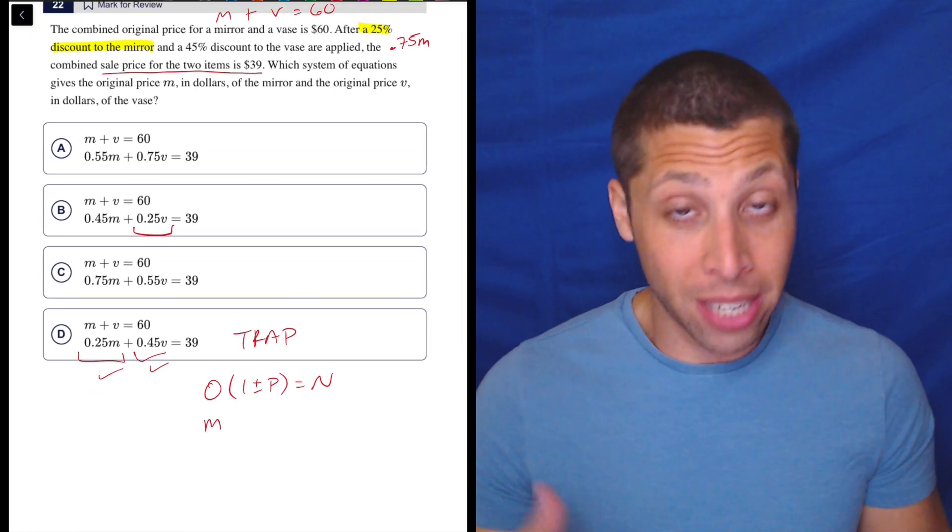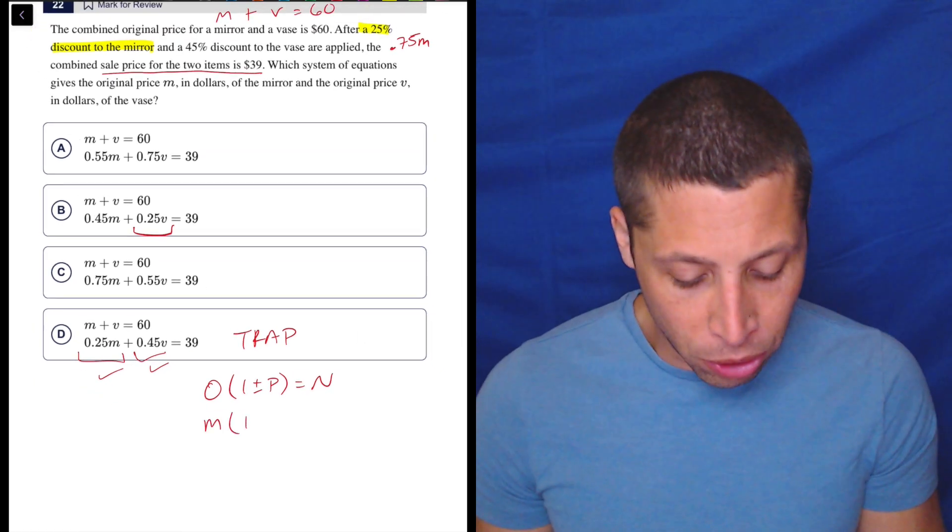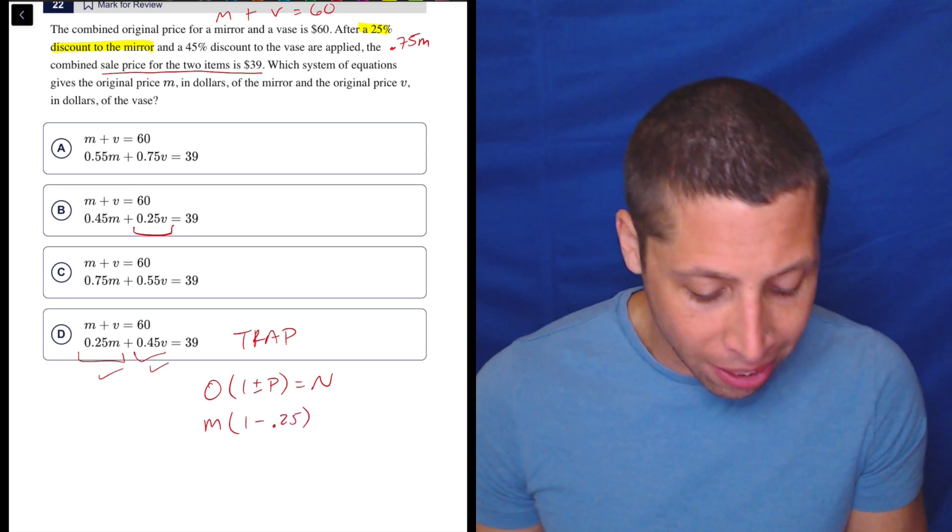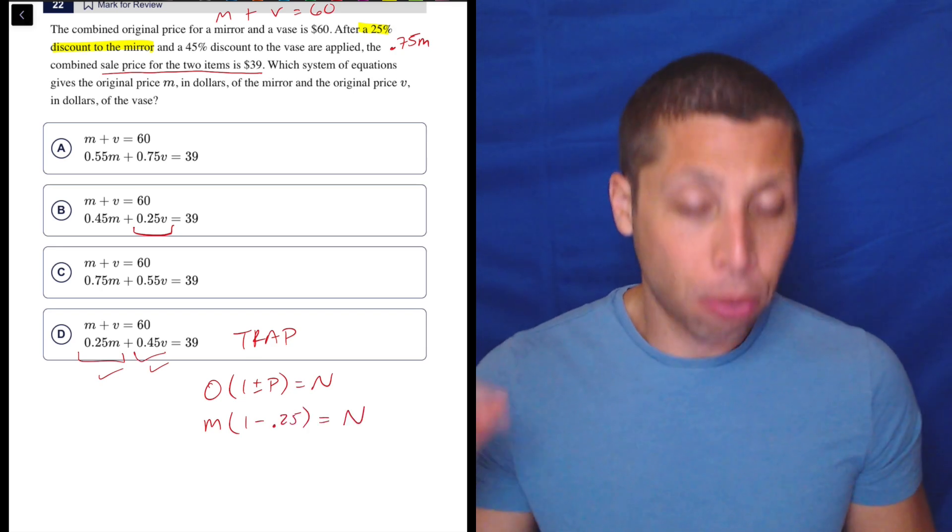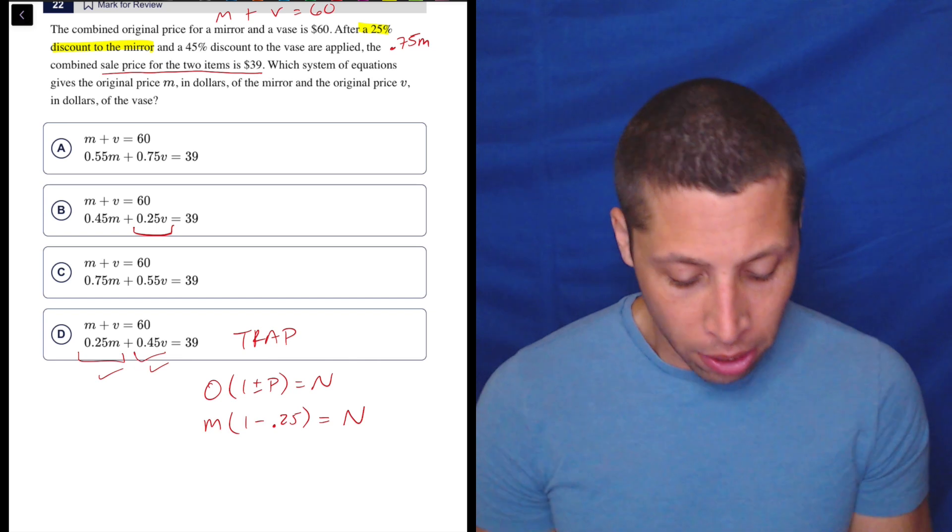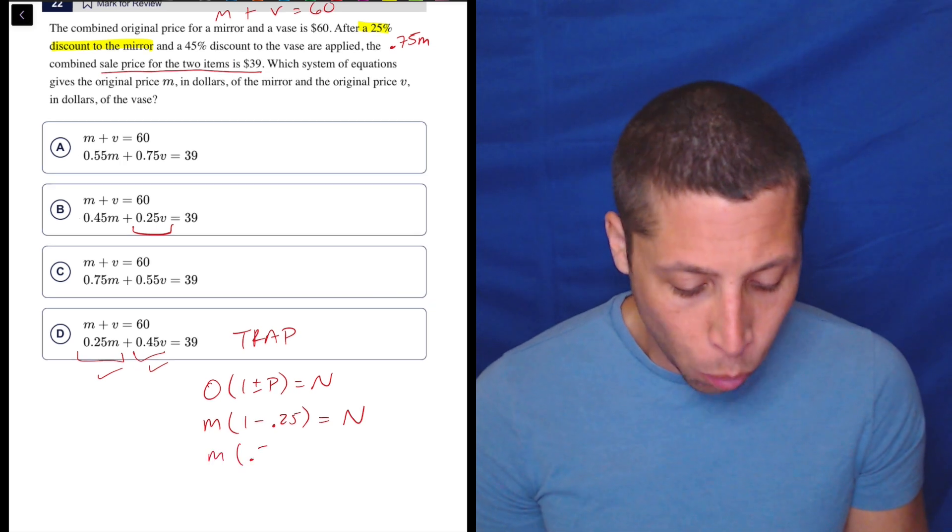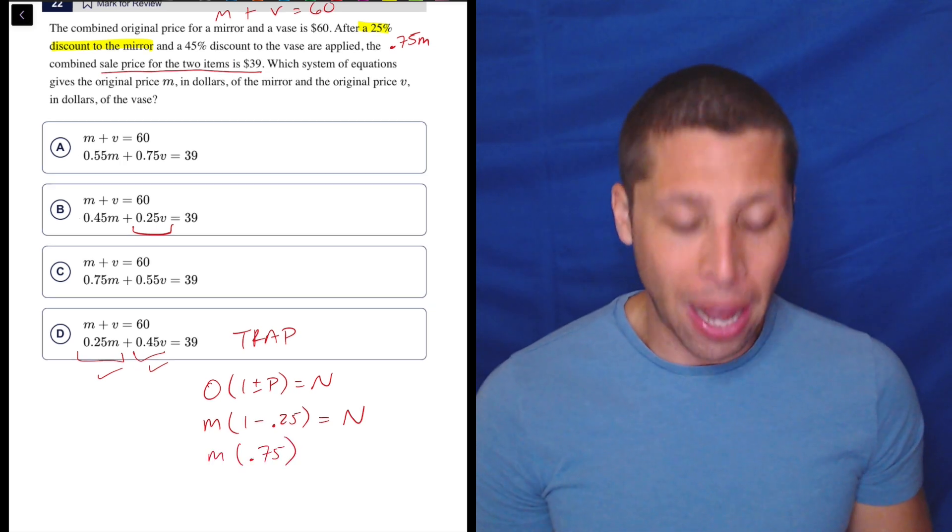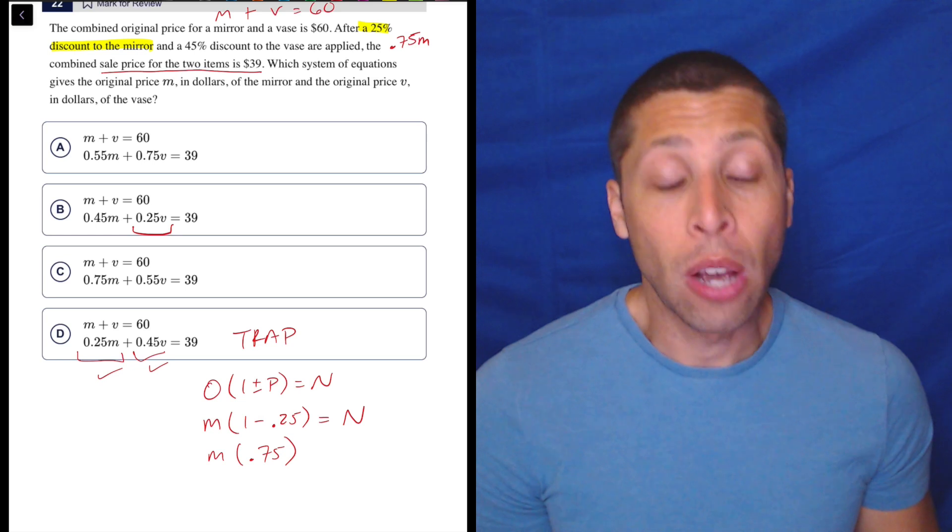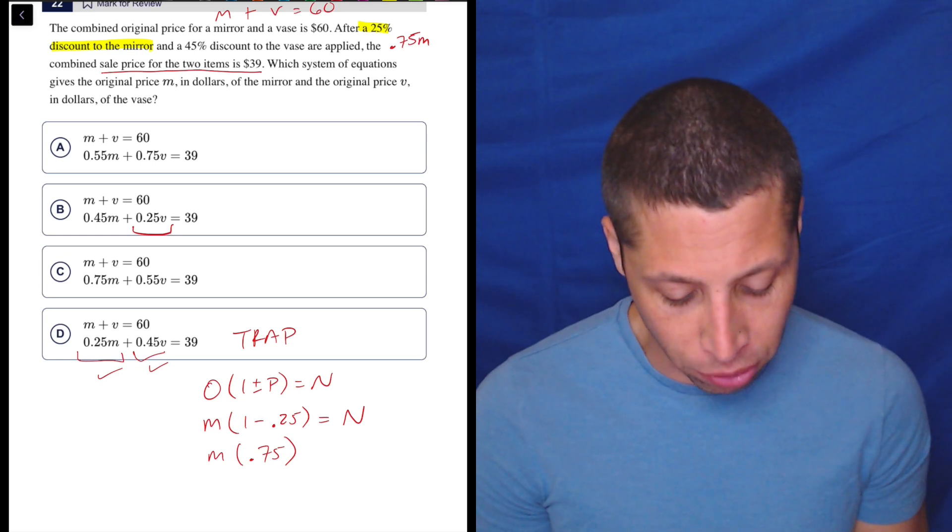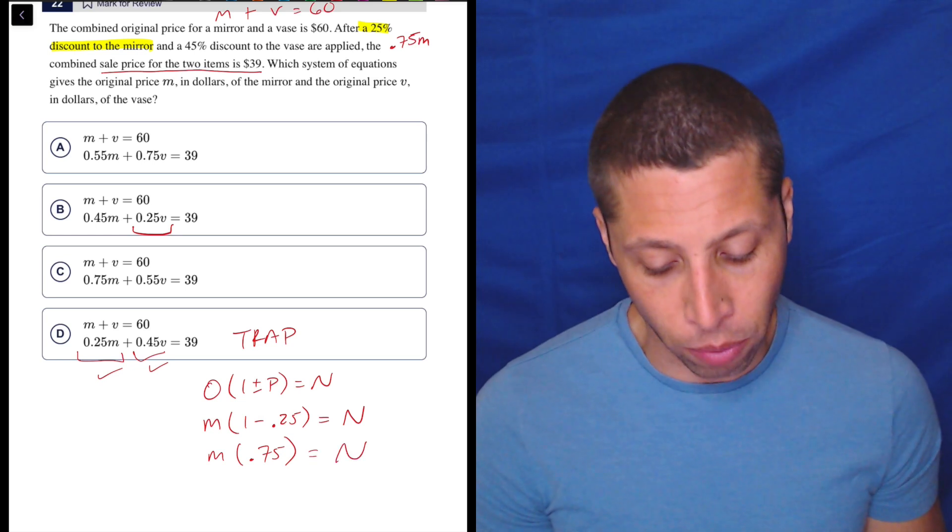And then what are we doing? We're doing a discount. So we subtract and that's going to give us the new price, the sale price of that mirror. So when we do that subtraction, we don't end up multiplying the M by 25 or 0.25. We end up multiplying by 0.75. So that's what we need to do in order to get this equation right.